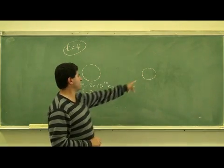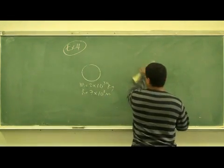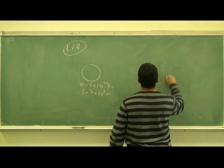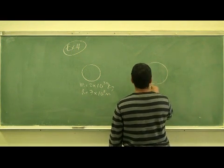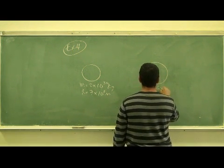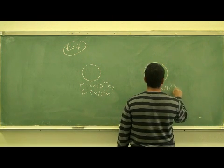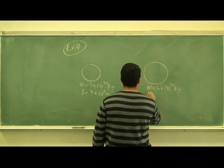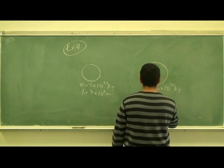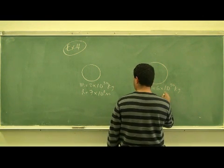So let's say there's another star here, let's make it bigger. The mass of this is 6 times 10 to the 30 kilogram, 3 times heavier, and the radius is a little bit bigger, 9 times 10 to the 8 meters.